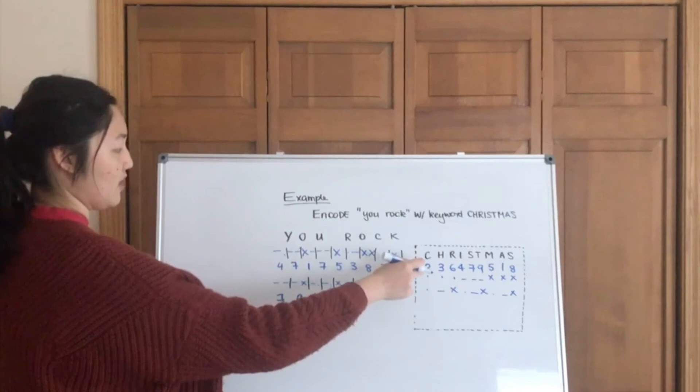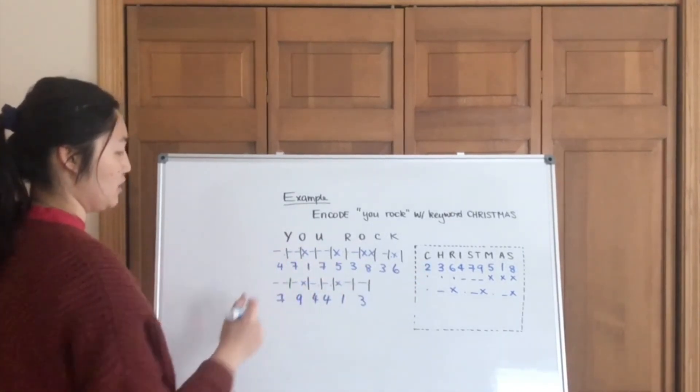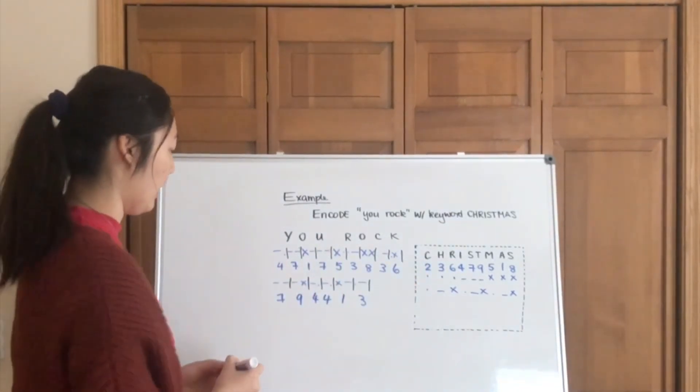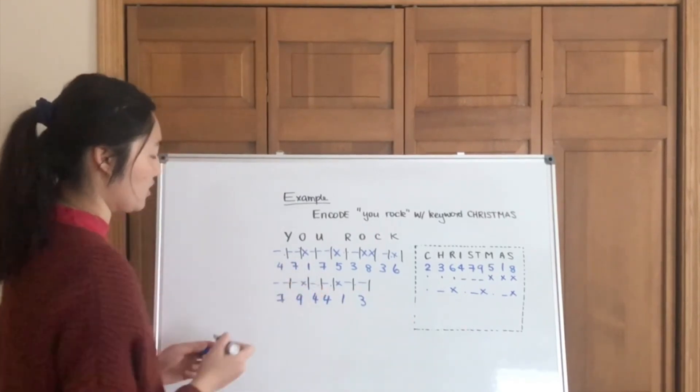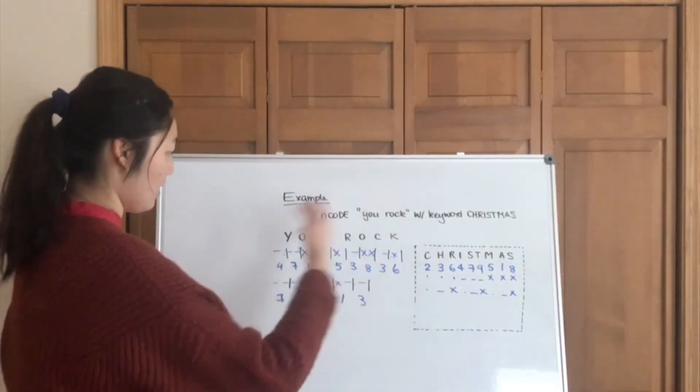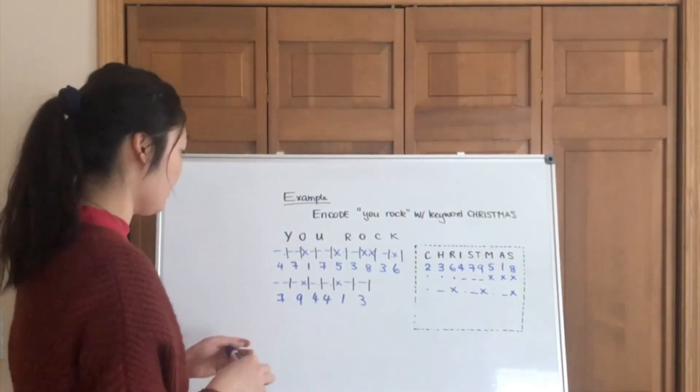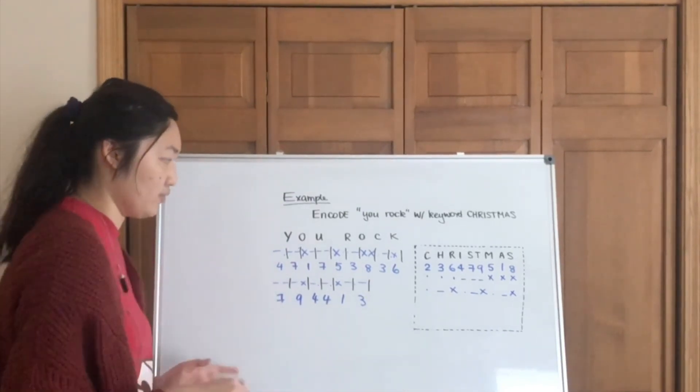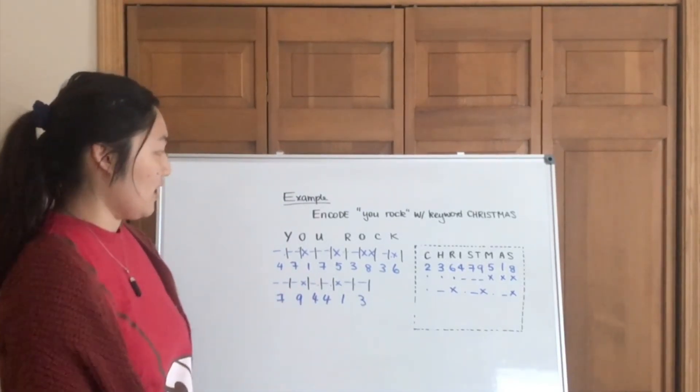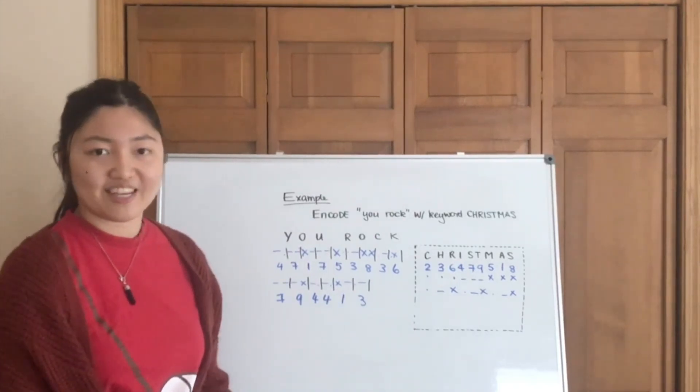Note that you have to read from top to bottom, and then transfer it from left to right here. And so the final answer of encoding would be this sequence of numbers: 4, 1, 7, 4, 7, 1, 7, 5, 3, 8, et cetera. And that is how you encode with the Morbid Cipher.